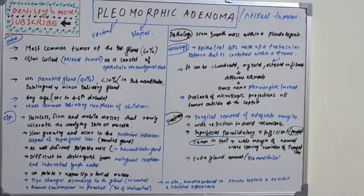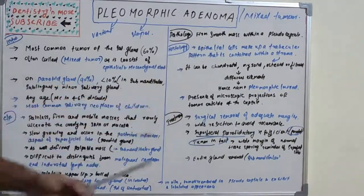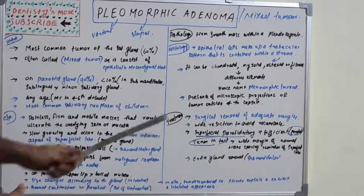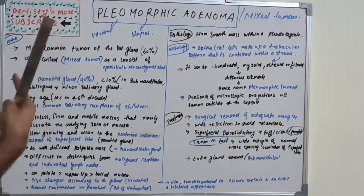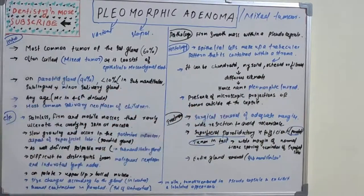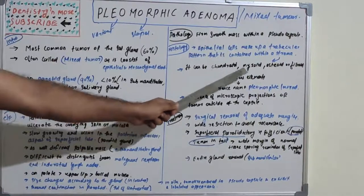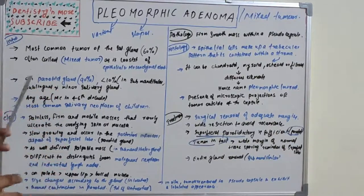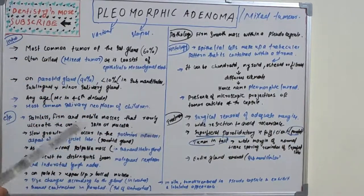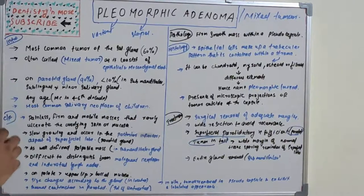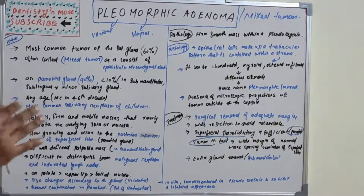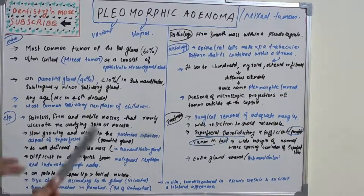The stromal cells can be chondroid, myxoid, osteoid, or fibroid — they can take various shapes. This is why the tumor is called pleomorphic or mixed tumor, because the epithelial cells in the trabecular pattern can have various shapes. Microscopic projections of the tumor can also be seen outside of the capsule.